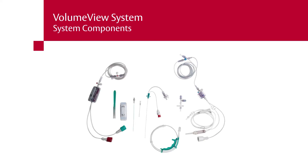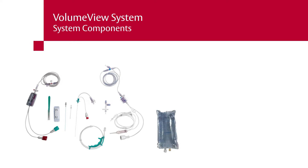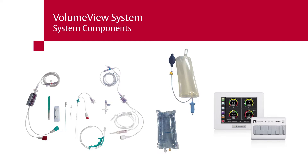The EV1000 volume view system is comprised of the following components: volume view disposable set, 4 French or 5 French catheter, dressing for femoral arterial catheter per institutional practice, central venous catheter IJ or subclavian per institutional practice and patient needs, sodium chloride flush solution bag 500 or 1000 milliliters, heparin per institutional practice, pressure infuser bag appropriate for flush bag being used, EV1000 clinical platform monitor with Ethernet cable, bifurcated power cable and mounting solution, and other necessary cables including a volume view trifurcated pressure cable, a thermistor cable, and an OM module if the Edwards oximetry central venous catheter is being used.